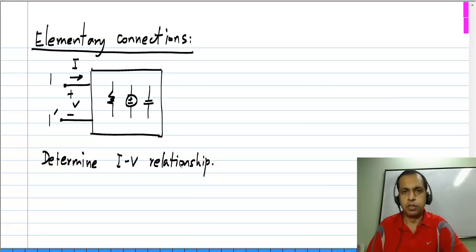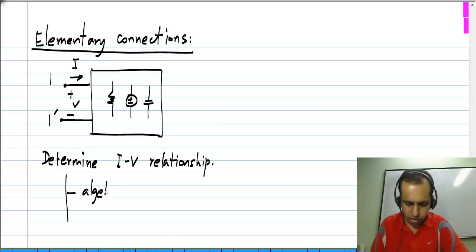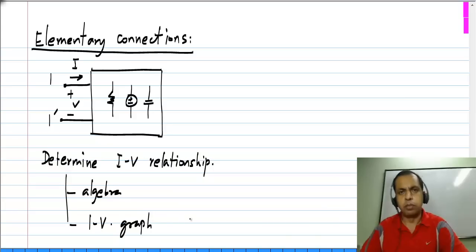For single elements we saw that we could either specify algebraically, such as Ohm's law, when we say V equals I R, or we could draw a straight line in the I-V plane with a slope of 1 over R. Both of these correspond to a resistor. Sometimes one is more convenient than the other and we are going to use that one.